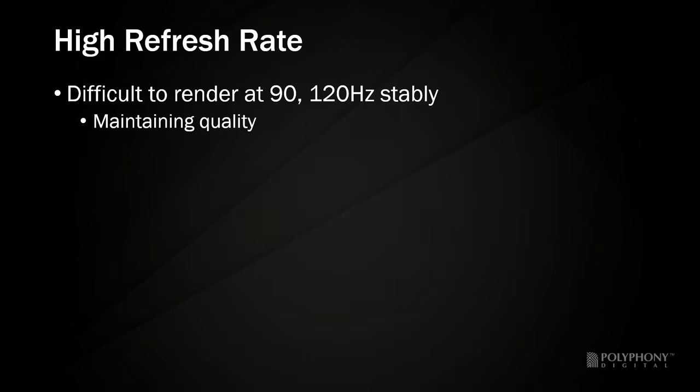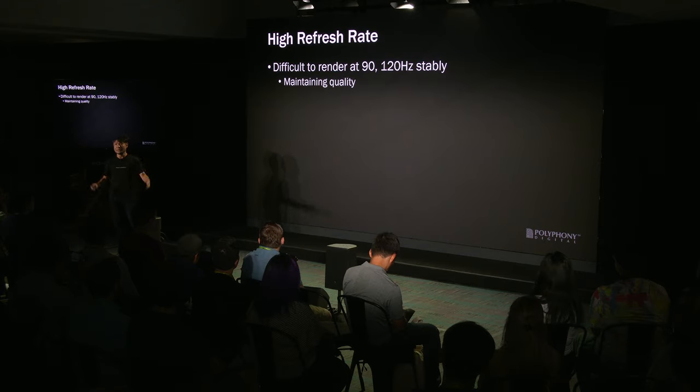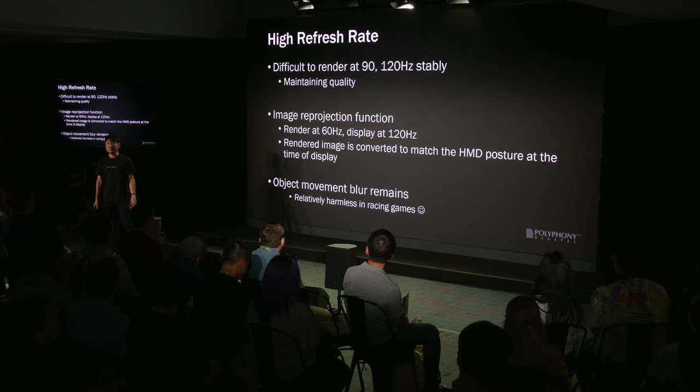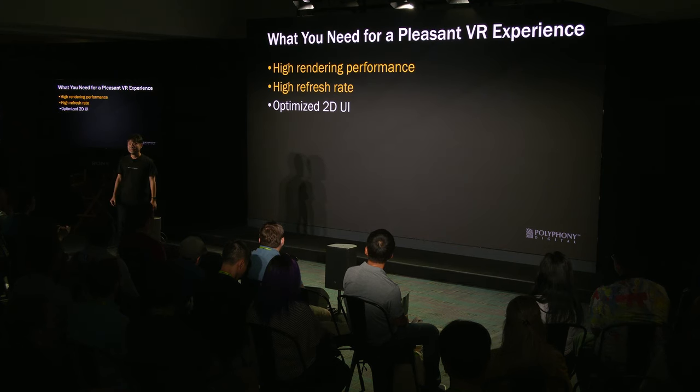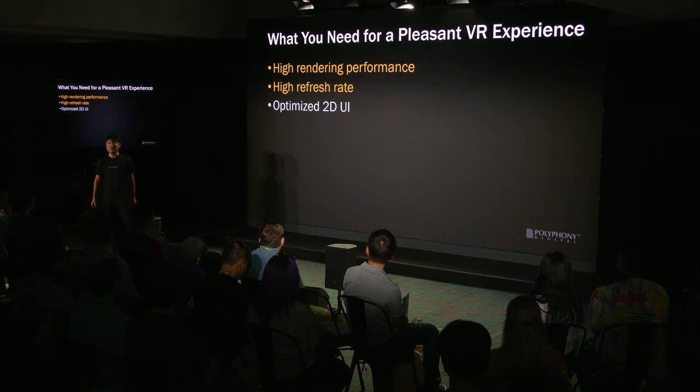Another issue is how to achieve a high refresh rate. Rendering at refresh rates such as 90Hz or 120Hz while maintaining quality was difficult due to load constraints. This is why the reprojection function is used — it renders at 60Hz and displays the screen at 120Hz. The rendering results are converted and displayed according to the posture of the head-mounted display at the time of display. In general, object motion blur remains, but this is relatively harmless in racing games. By using the features introduced so far, we achieved high rendering performance and high refresh rates.